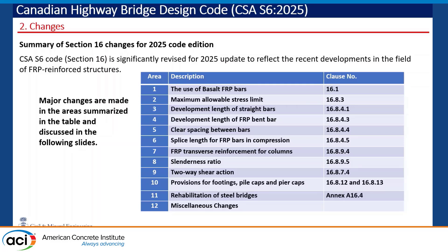We have tested a number of columns with steel reinforcement as the longitudinal reinforcement and spirals or ties made of GFRP, and we find that behavior seems to be superior to steel reinforced or steel confined columns.